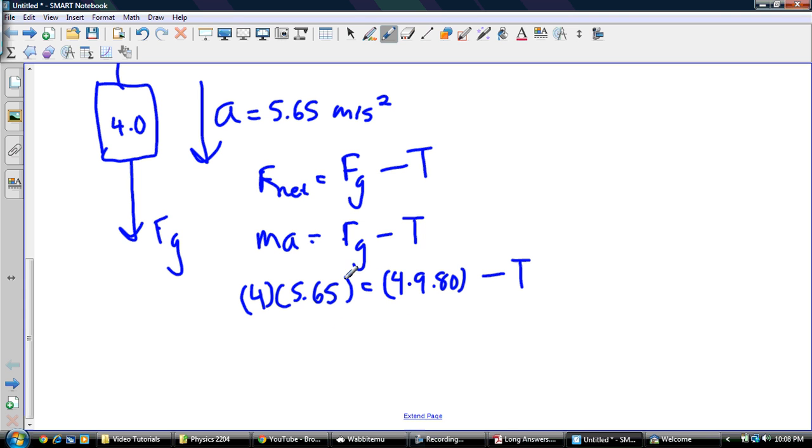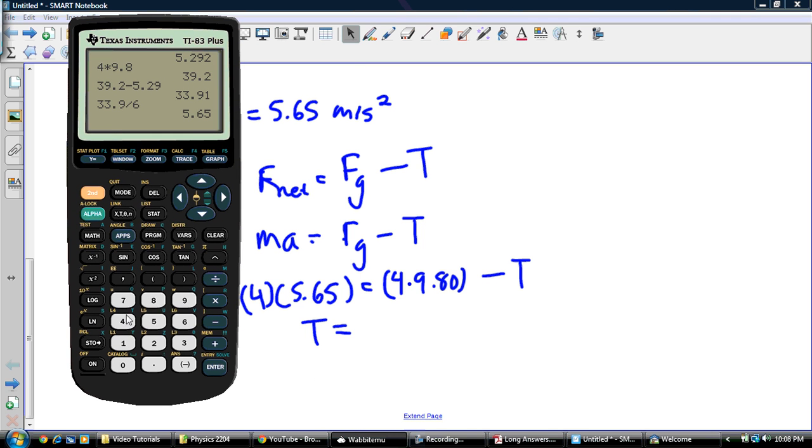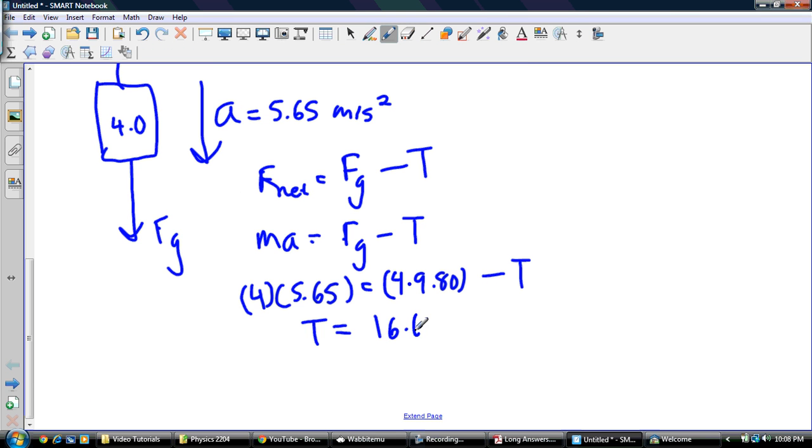So now basically I'm just going to do the math on this thing. So I'm going to take this across to the other side and subtract it. So tension, let's see, I'm going to have 4 times 9.8 subtract 4 times 5.65, and that's equal to 16.6 newtons.